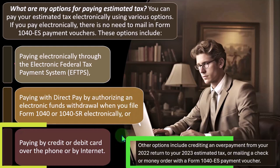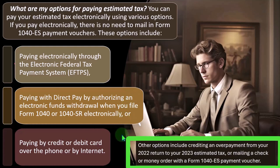Other options include crediting an overpayment from your 2022 return to your 2023 estimated tax, or mailing a check or money order with Form 1040-ES payment voucher. Note that taxes are usually paid on a quarterly basis — that's when the IRS wants them.